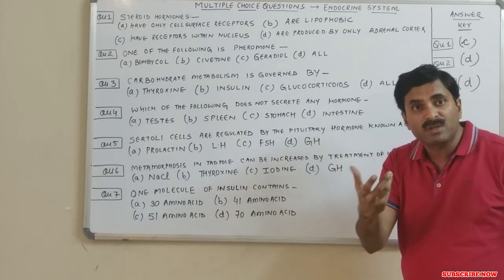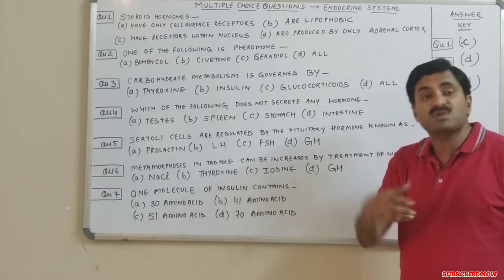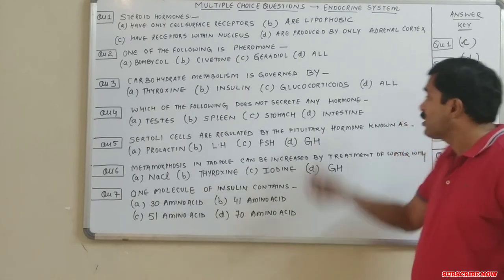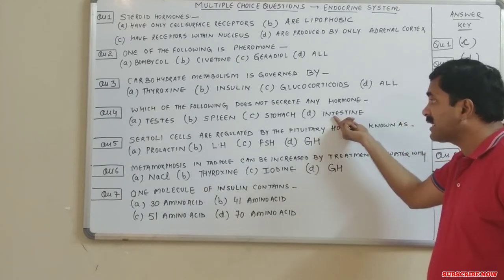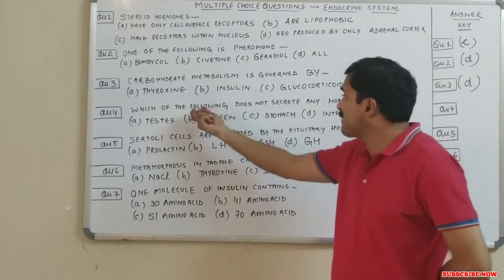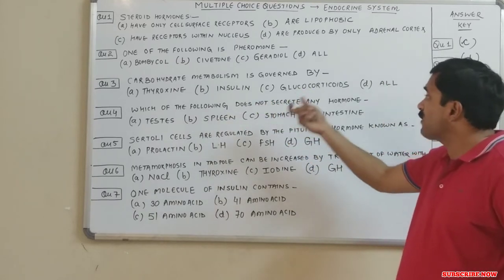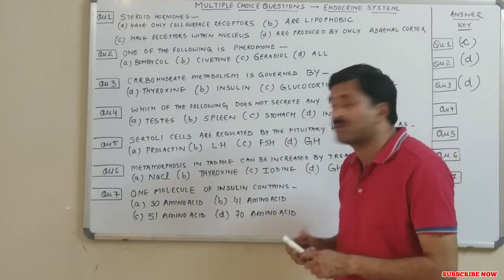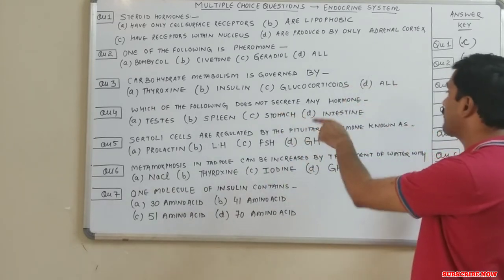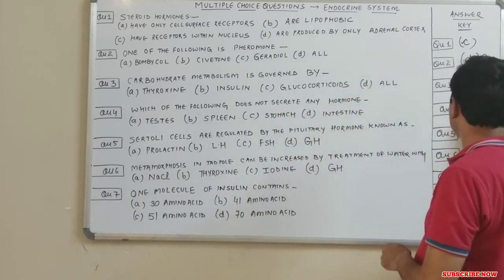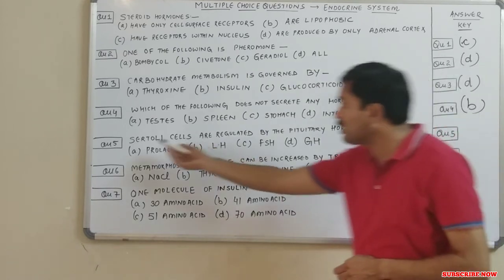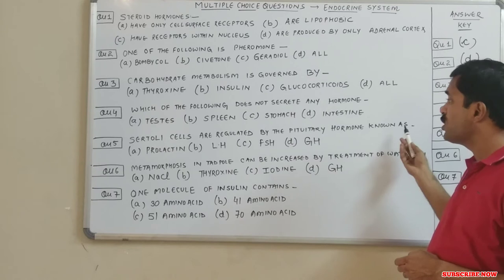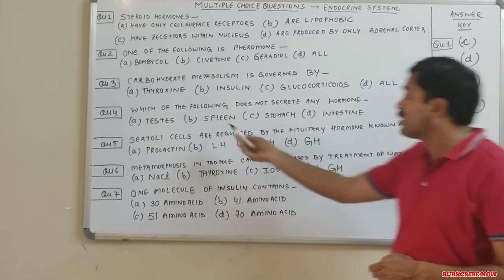The intestine also releases certain hormones such as duocrinin, villicrinin, secretin, and cholecystokinin. Since we need to choose which organ does not secrete any hormone, option B — spleen — is correct. The answer for question four is B.